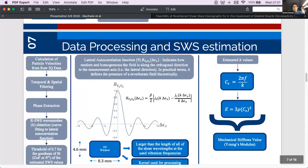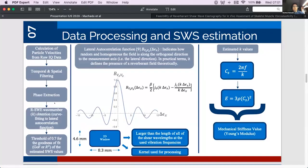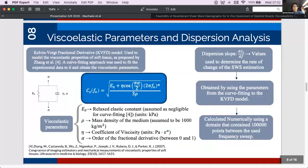To process the data a multi-frequency approach that includes the use of a spatial filter that considers only the extracted phase information was used in order to obtain the shear wave number by feeding the experimental data to the lateral autocorrelation function. This function indicates how random and homogeneous the field is along the orthogonal direction to the measurement axis and in practical terms it defines the presence of a reverberant field theoretically. Afterwards, a minimum threshold of 0.7 for the goodness of fit of the estimated shear wave speed values was applied. The Kelvin-Voigt fractional derivative model was used to obtain the viscoelastic parameters from the experimental data by using a curve fitting approach and also the dispersion slope or DCSDF values were calculated.